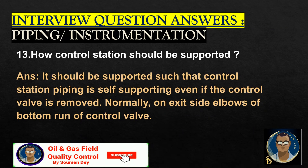How should a control station be supported? It should be supported such that the control station piping is self-supporting even if the control valve is removed — normally on the exit side of elbows of the bottom run of the control valve.